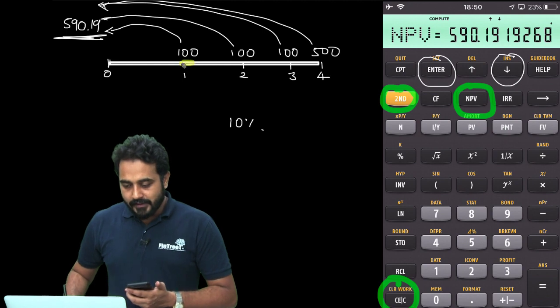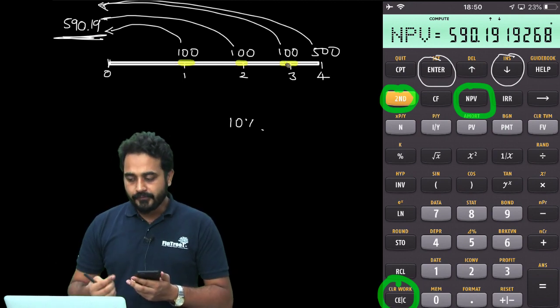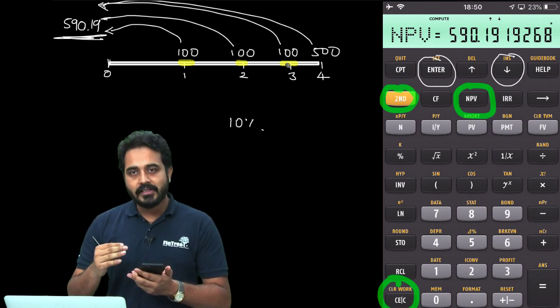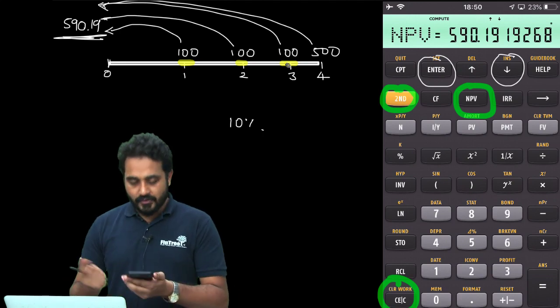Observe that this 100 repeated consecutively 3 times. So, we can make use of that frequency, that F0 button. Say that it is being repeated 3 times and we can avoid entering so many numbers. So, here is how we are going to do it.